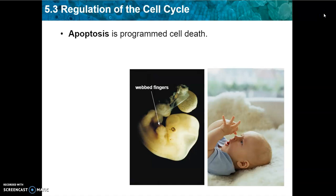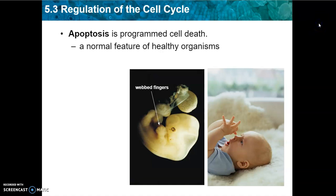Apoptosis is a programmed cell death. All cells will eventually die. The goal is that they will reproduce themselves before they die so that the organism can continue to make more cells. Apoptosis is a normal feature of healthy organisms — it's a good thing.